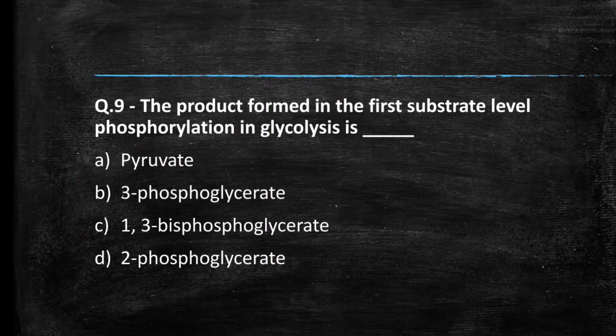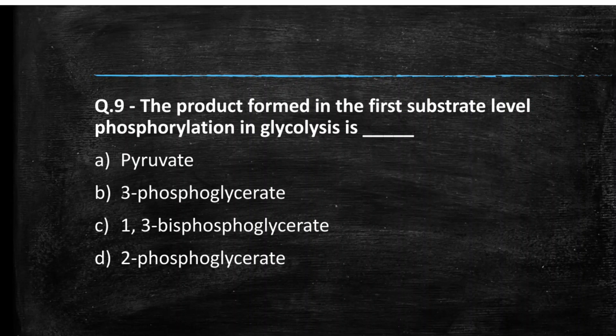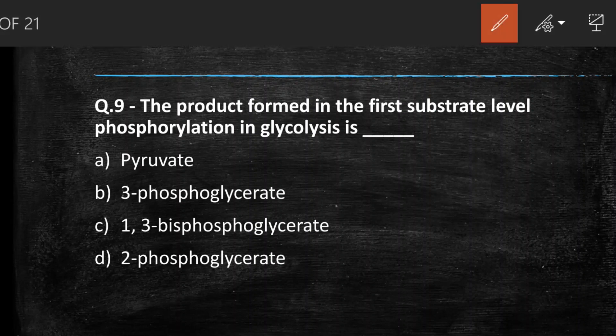Next question: the product formed in the first substrate-level phosphorylation in glycolysis is — (A) Pyruvate, (B) 3-phosphoglycerate, (C) 1,3-bisphosphoglycerate, (D) 2-phosphoglycerate. The right answer is option B, 3-phosphoglycerate.